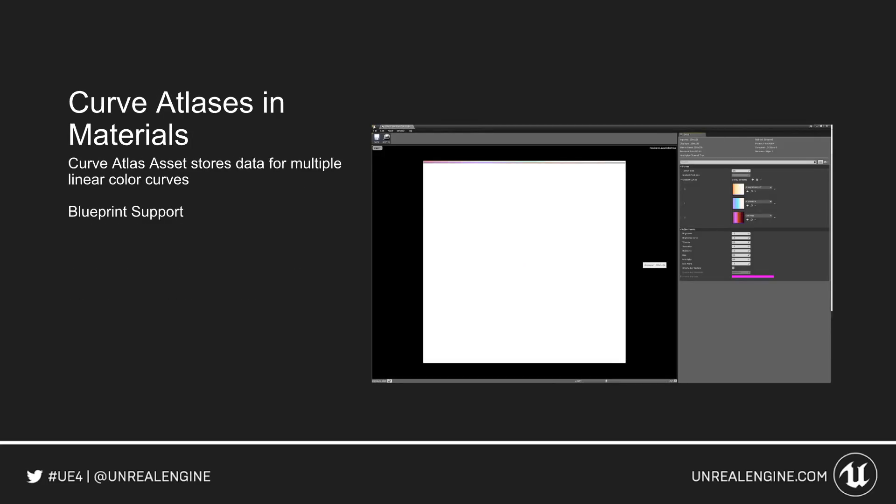Curve Atlases and Materials. Previously, we had Linear Curves. Now you can support Curve Atlases — an asset that stores multiple Linear Curves. You can access it inside of items that usually use Linear Curves inside your materials, and it has support for Blueprints.